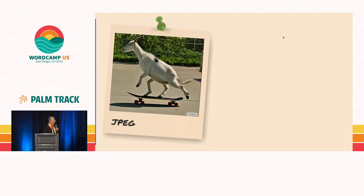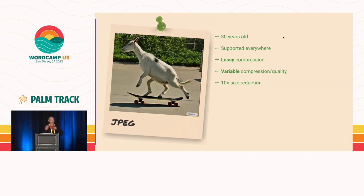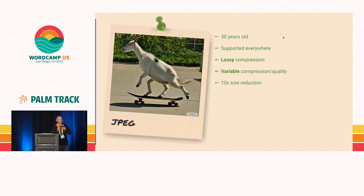Then along comes JPEG, 30 years old. It's supported everywhere, and it introduced lossy compression with a variable level of quality — you could choose the quality you wanted, and the lower the quality, the smaller the image. This was like a revolution, because you could suddenly achieve 10x compression, reducing images to tiny sizes, which was really important at the time because we had dial-up modems and were trying to keep images under 50 kilobytes. Compression was really important, and we would tweak our images to get them to where they still looked okay but were heavily compressed.